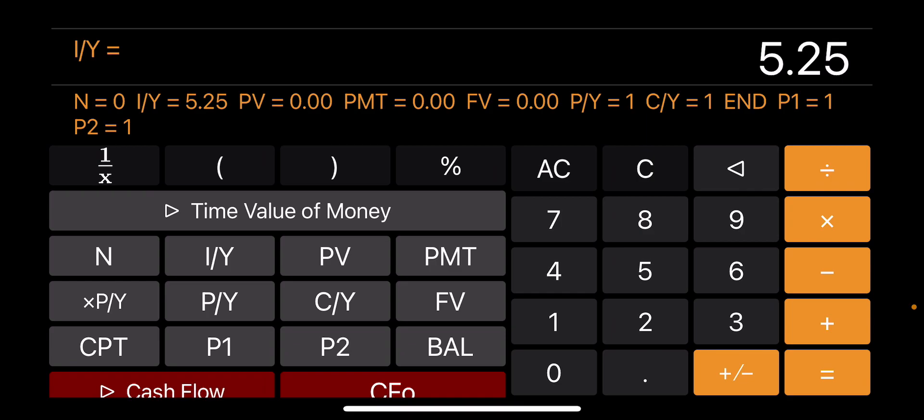PMT stands for payment, which is kind of obvious. Then P/Y is the number of payments per year, so for mortgage it's usually 12. And then C/Y is the number of compounding periods per year, which at least for American mortgage is again usually the same as P/Y, which is 12. FV is a future value. We're not going to need it for the mortgage, at least in the calculation that I'm going to show you today.